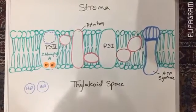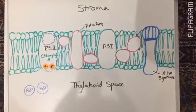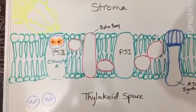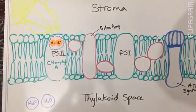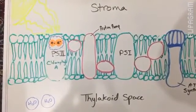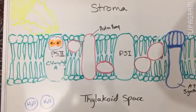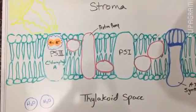In this video, we will show you a non-cyclic light reaction occurring inside of a thylakoid membrane. When a photon of light strikes the reaction center of Photosystem II, it excites an electron, sending it up to the primary electron acceptor.